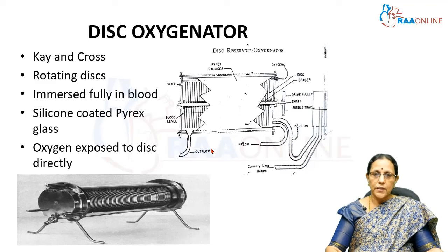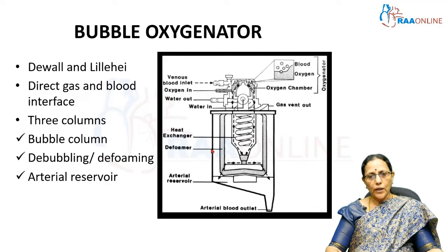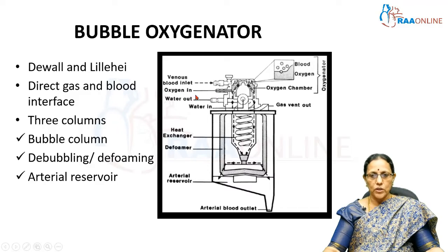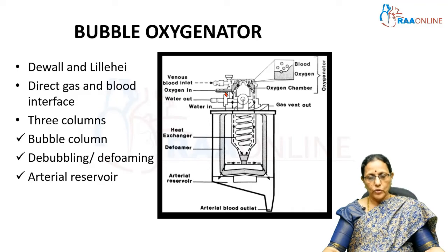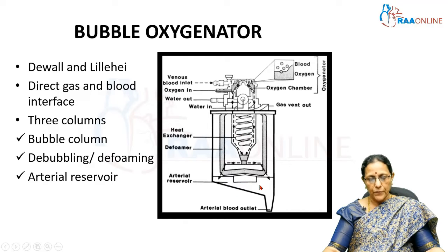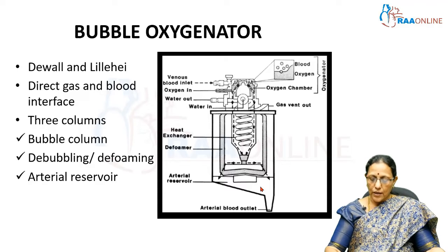Due to disadvantages like foaming, frothing, and trauma to the blood, the next generation of oxygenators evolved — the bubble oxygenator. The bubble oxygenator was designed by Deval and Lilly. Here there is direct interface of gas and blood, so whenever the venous blood drains into the oxygenator it is bubbled directly with oxygen. This bubbling may cause froth and foam, so these are collected in an arterial chamber which incorporates a de-foaming agent and a de-bubbling column. The foamed blood gets de-foamed and filtered, collected in the arterial reservoir, and is then taken by the arterial pump into the patient.